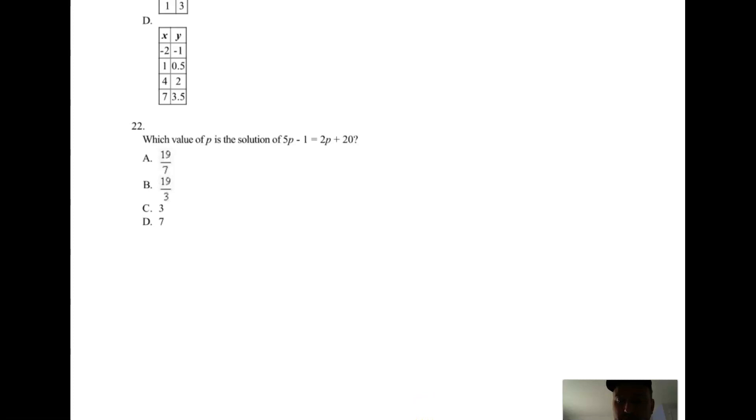Which value of p is the solution of 5p minus 1 equals 2p plus 20? There's no parentheses to distribute, there's no like terms to combine on the left hand or the right hand side of the equation. So hopefully you added 1 here, added 1 here. 5p equals 2p plus 21. Subtract 2p to both sides. You get 3p equals 21.